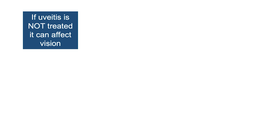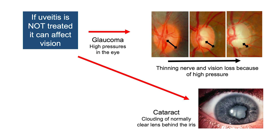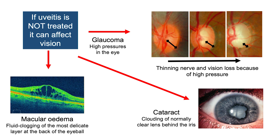If uveitis is not treated, the pressure can go up inside the eye, thinning out the nerve in the back of the eye — this is called glaucoma. The normally clear lens inside the eye can go cloudy — this is called a cataract. There can also be swelling of the tissues at the back of the eye, called macular oedema.